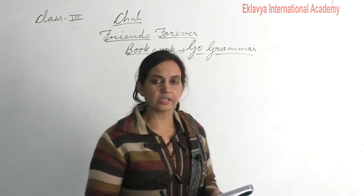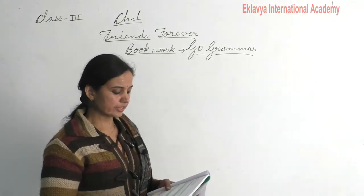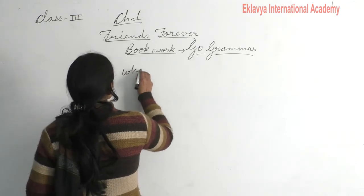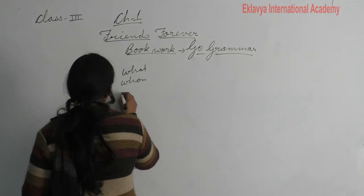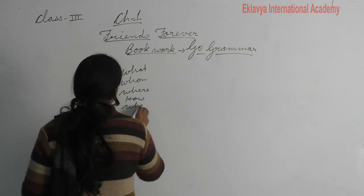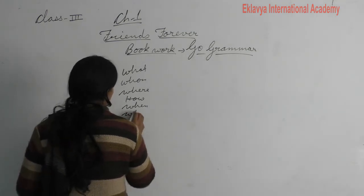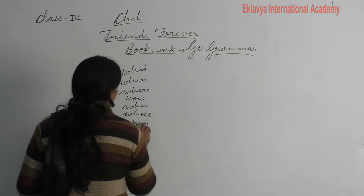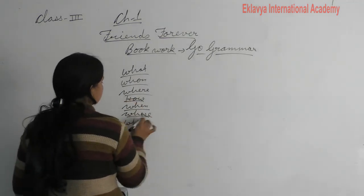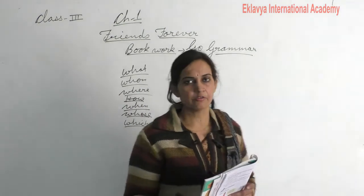An interrogative sentence asks a question. These type of sentences often begin with WH-words — what, whom, where, how, when, whose, which. Interrogative sentences mostly start from WH-words, and sometimes they are formed by a helping verb also. When we want to know only yes or no, in that condition they are formed only from a helping verb.